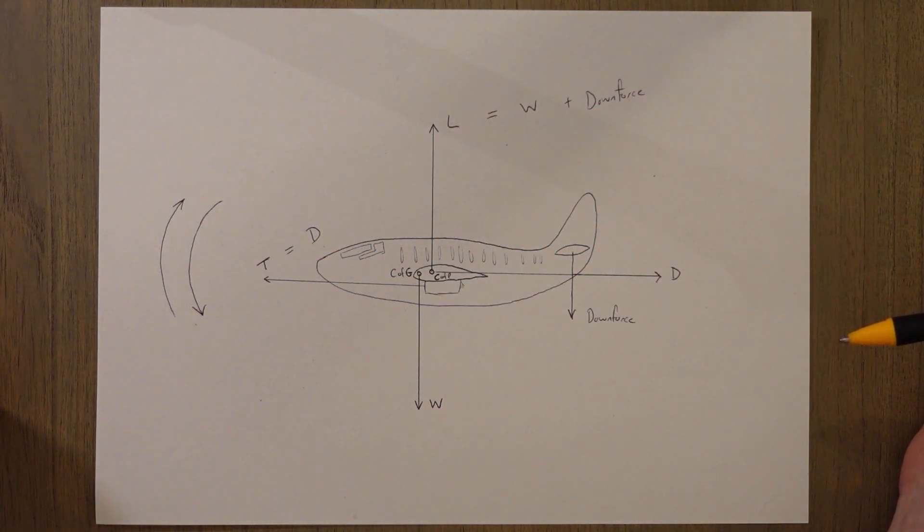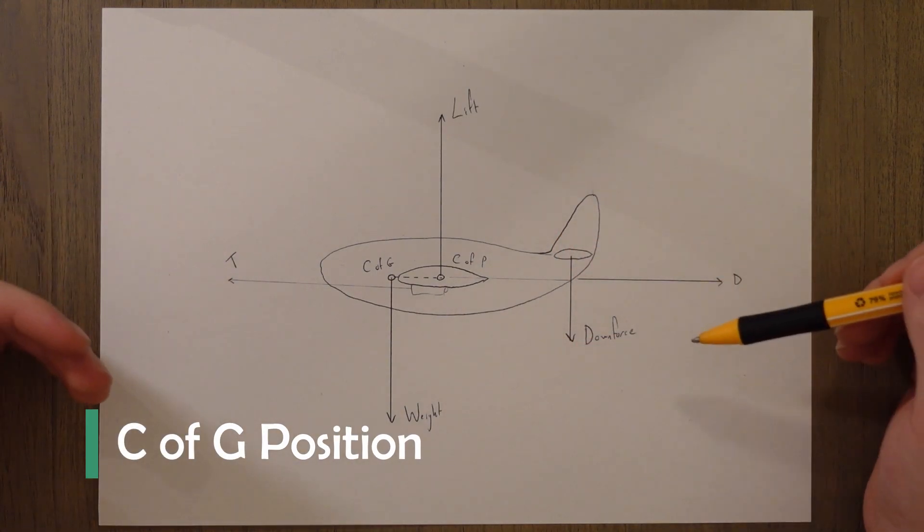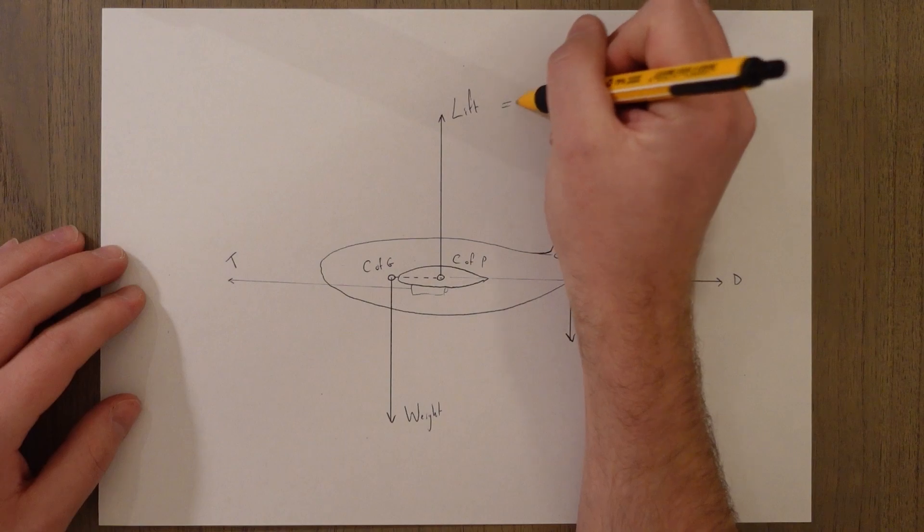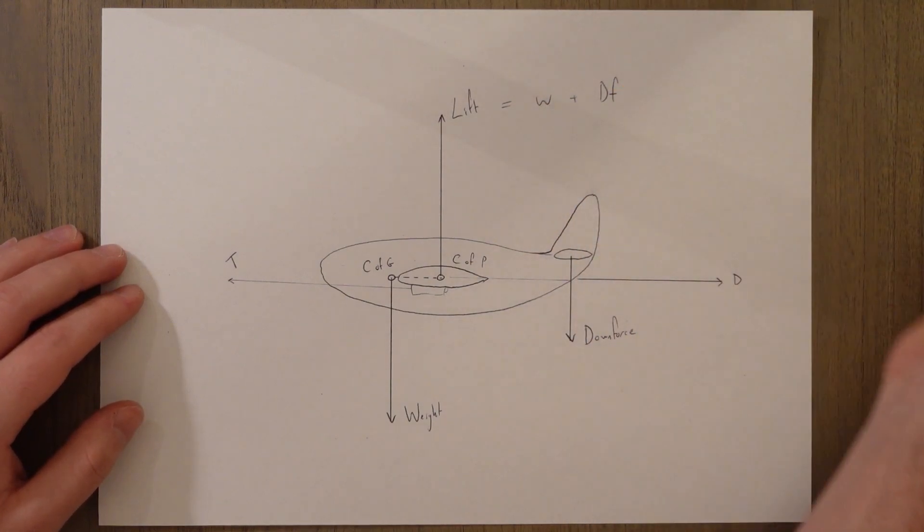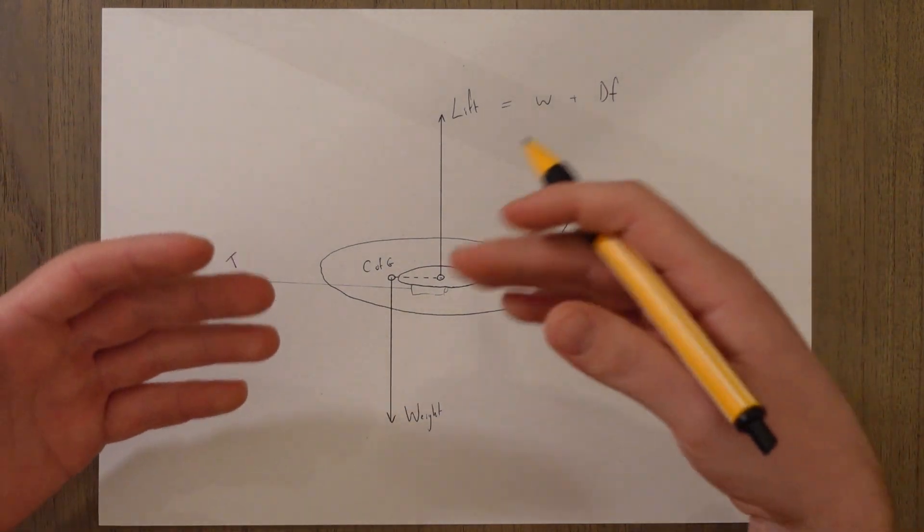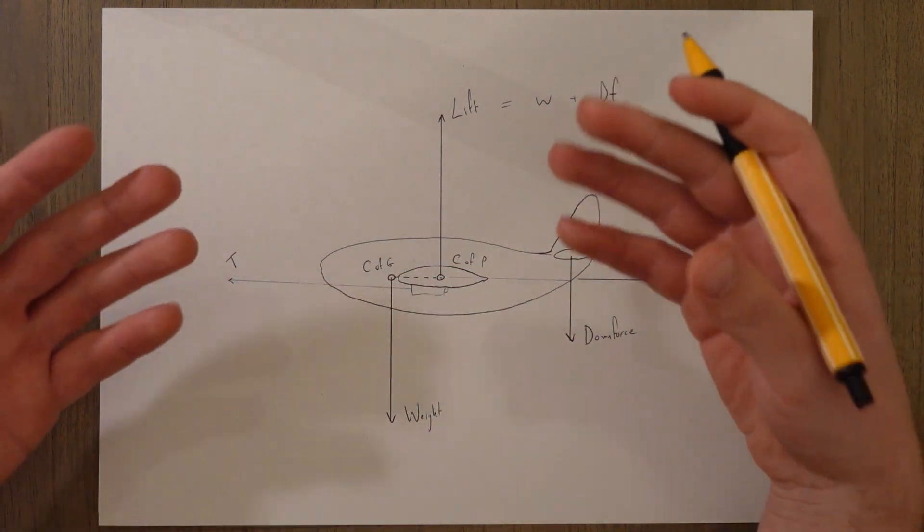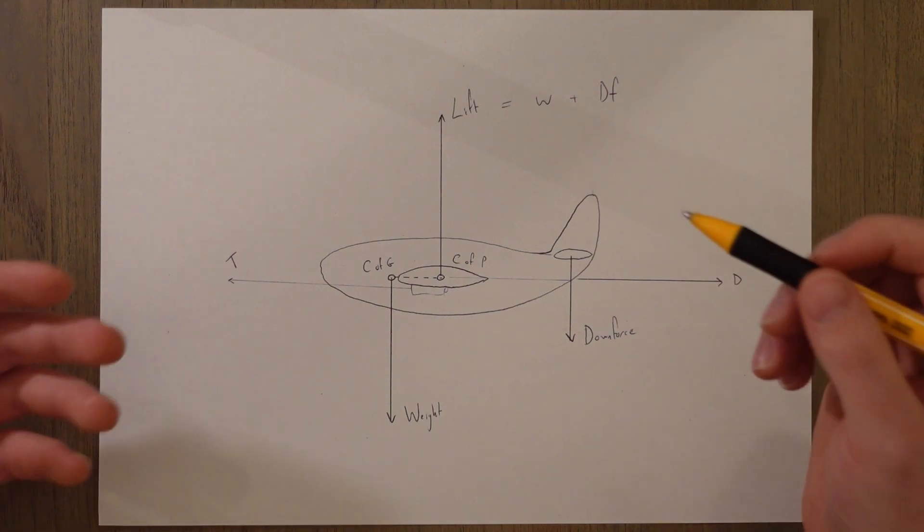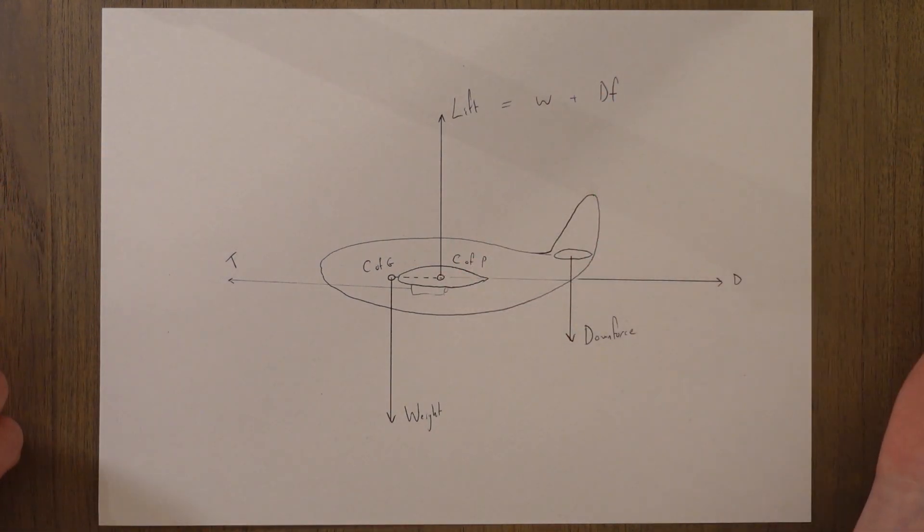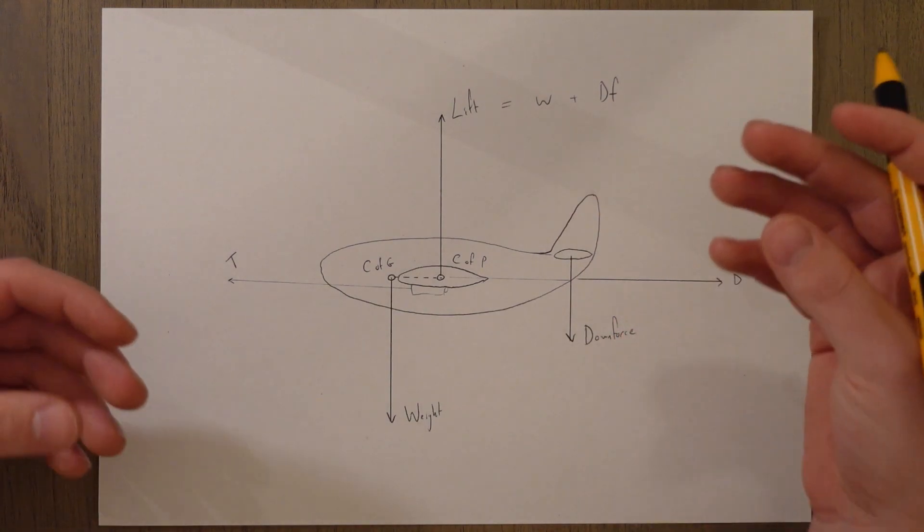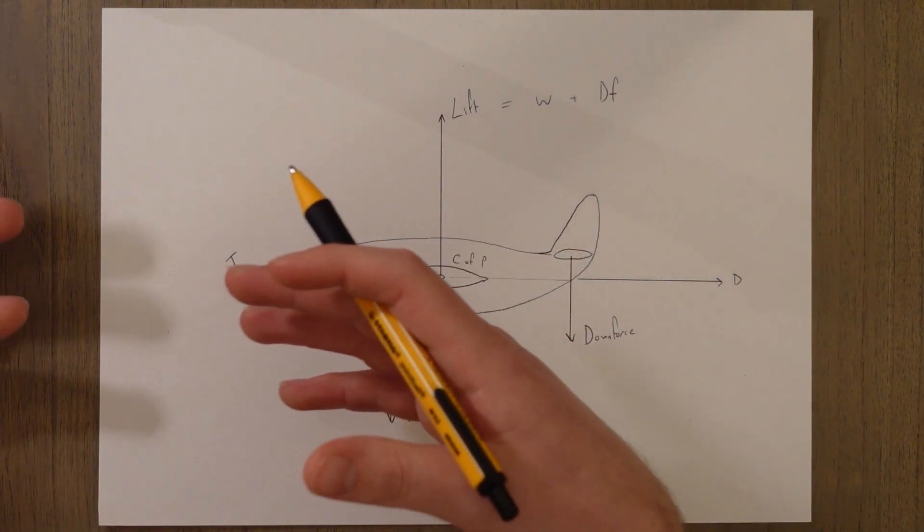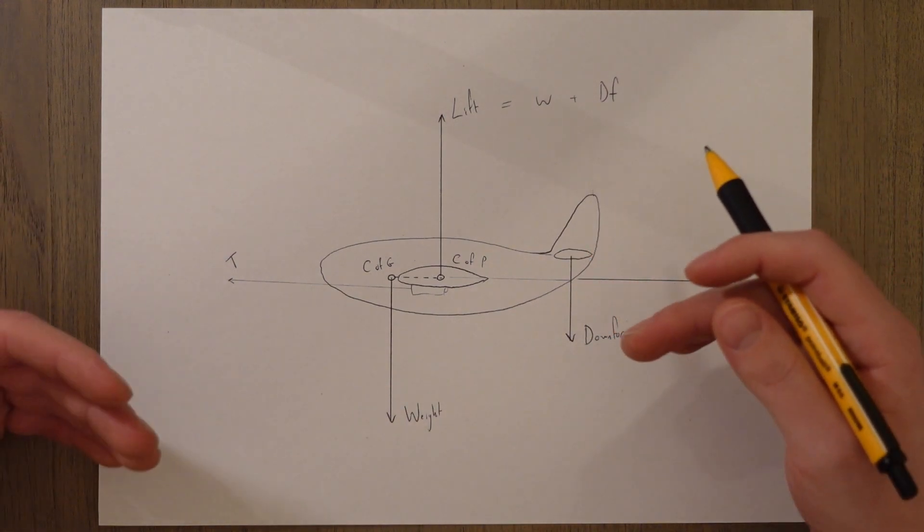The downforce produced at the tail requires lift to be larger than weight in order to balance out this extra downforce, so lift equals weight plus downforce. This extra lift means we also produce more induced drag because induced drag is generated by producing more lift. The horizontal stabilizer generates downforce using an upside down wing and also produces a bit of aerodynamic induced drag.